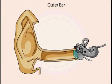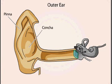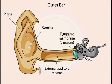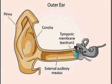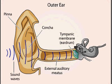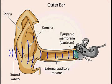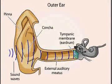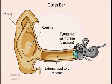The external ear, which consists of the pinna, concha, and auditory meatus, gathers sound energy and focuses it onto the eardrum, also known as the tympanic membrane. The configuration of the external ear amplifies the sound, particularly at the frequency range of 2 to 5 kHz, a range that is important for speech perception.